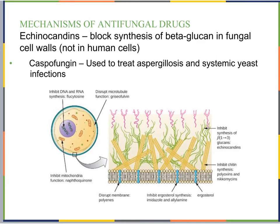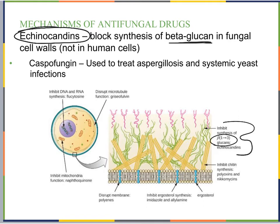Another group of antifungals are the echinocandins, which block the synthesis of beta-glucan — a molecule found in fungal cell walls. Unlike our cells, fungi have cell walls made up of chitin and beta-glucans. If beta-glucan synthesis is blocked, the fungus can't make its cell wall and the cell dies. Caspofungin is an example, used to treat aspergillosis and systemic yeast infections.